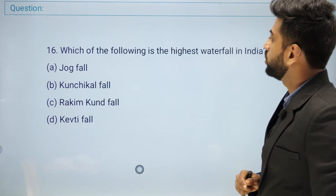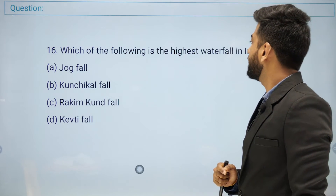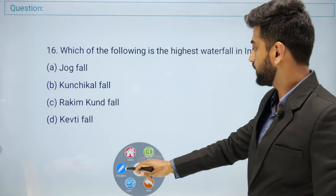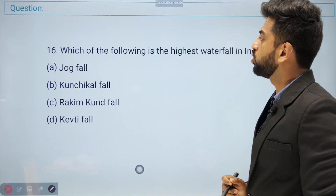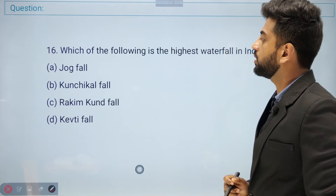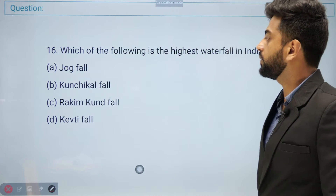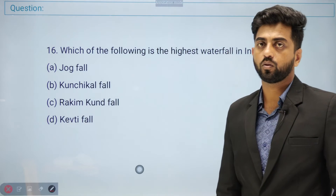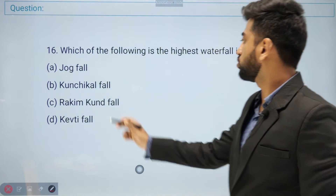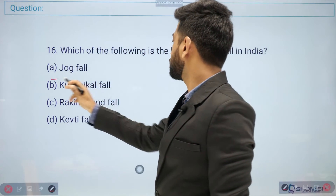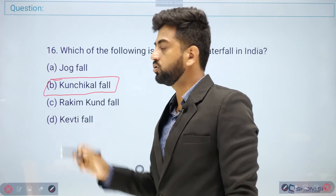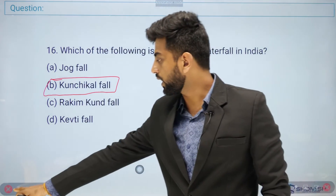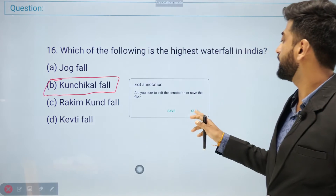Which of the following is the highest waterfall in India? Options: Jog Falls, Kunchikal Falls, Rakimkund Falls, or Kepti Falls. It's a common question. The right answer is Kunchikal Falls — not Jog Falls. Kunchikal Falls is the highest waterfall in India.